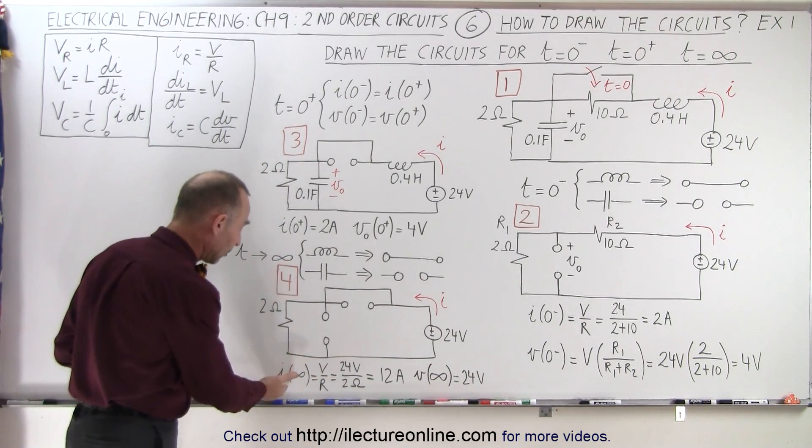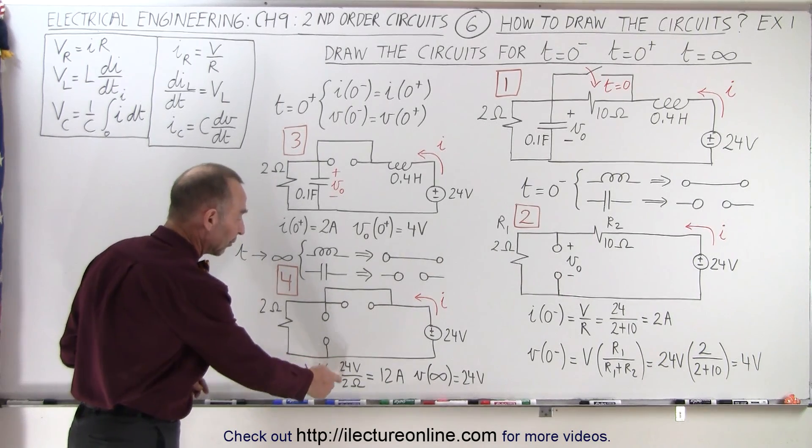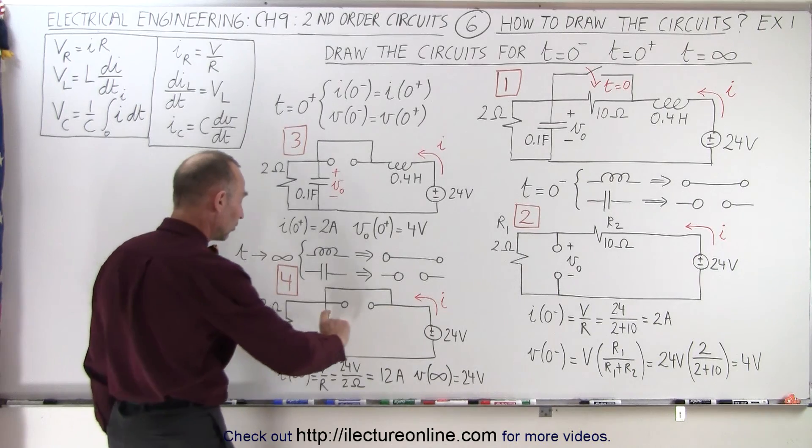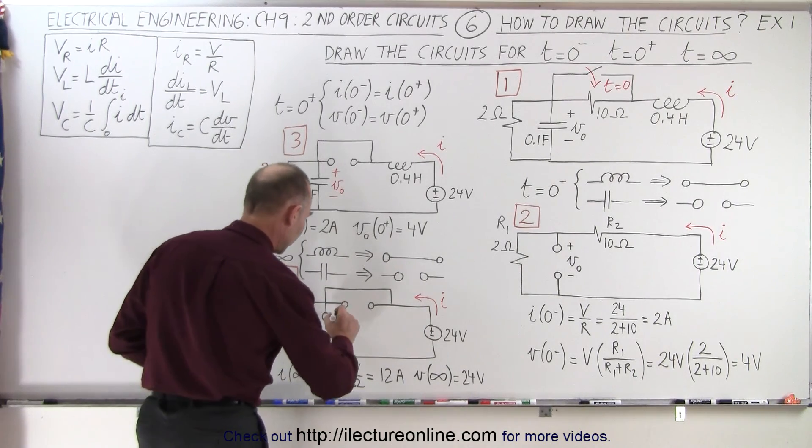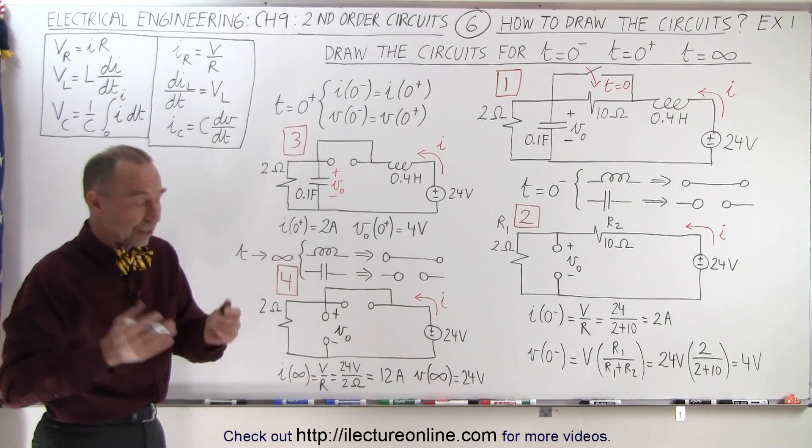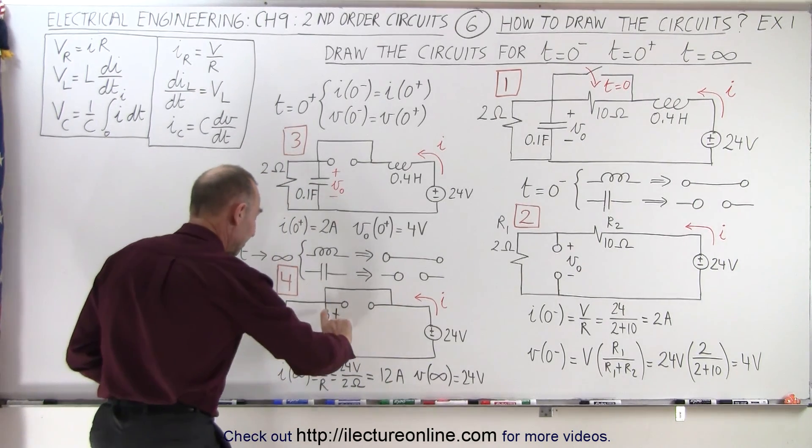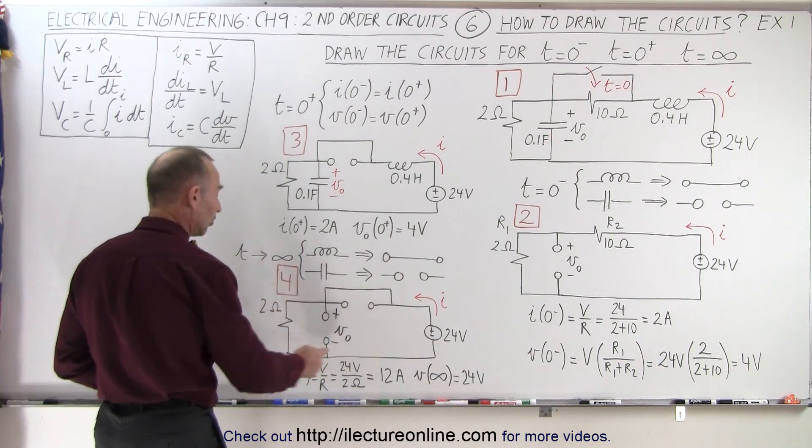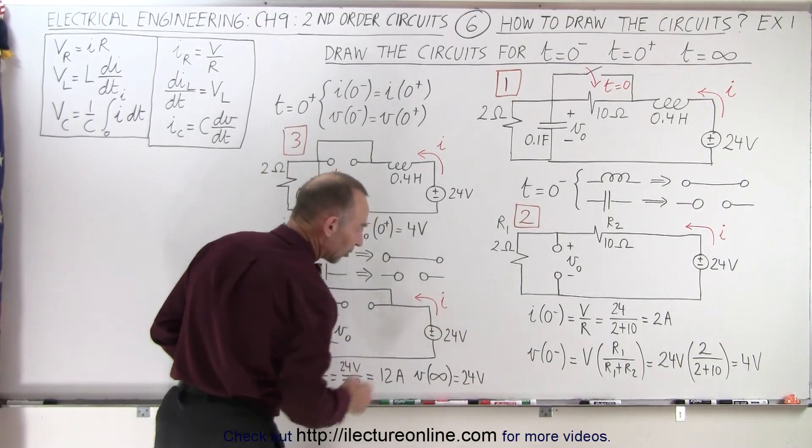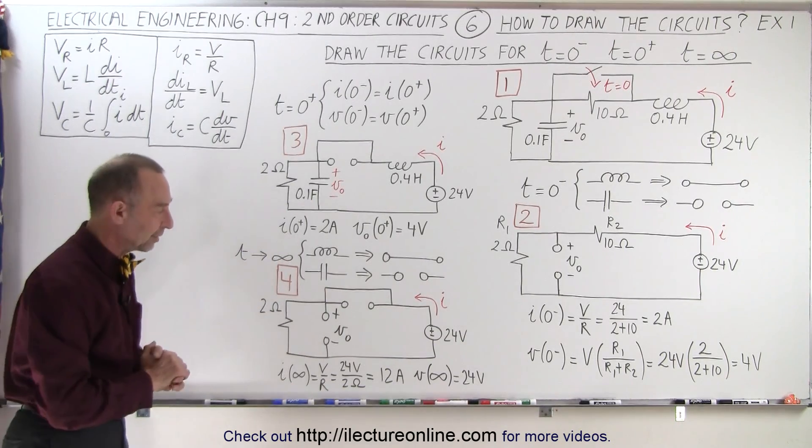So now the current, after a long time has gone by, is V over R, 24 volts divided by 2 ohms, which is 12 amps. And the voltage across the capacitor, of course, that's this right here, the output voltage across capacitor, the capacitor is still there. It just acts like an open circuit. You can see that's the same as the voltage across the 2 ohm resistor. Since that's the only resistance in the circuit, the entire voltage drops across that branch and it's therefore 24 volts.